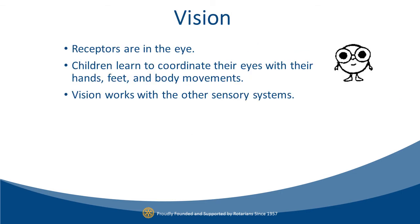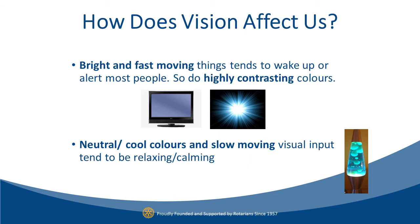Next up is vision. We receive visual information with our eyes. Children learn to coordinate their eyes with their hands, feet, and body movements. Vision works with the other sensory systems — like movement and body position — to provide more information: how far something is away, how big a step we need to take, or how hard we need to throw something. In general, bright and fast-moving things tend to wake us up and alert most people, as do highly contrasting colors. Neutral or cool colors and slow-moving visual input tend to be relaxing and calming.